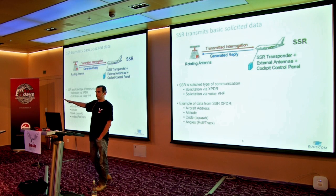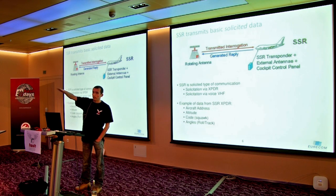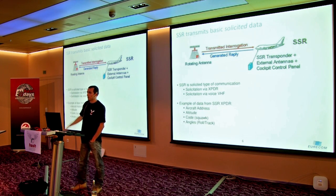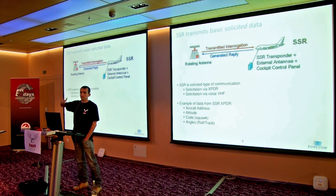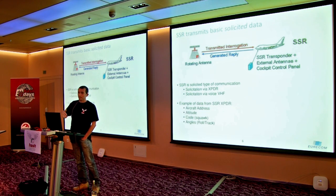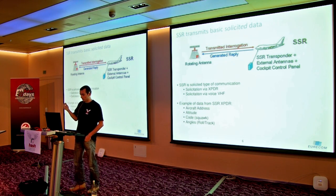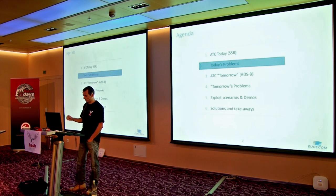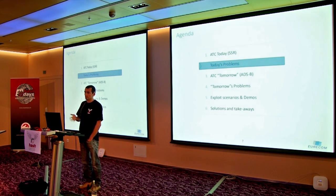Altitude is quite critical in maneuvering, especially in landing. The primary and secondary surveillance radars can locate an airplane on the horizontal axis but cannot precisely determine its altitude. So the aircraft must reply with altitude derived from barometric sensors. GPS is not that reliable for altitude, so various other sensors are used to get the most accurate reading. This is how the system has been working for the last 50 or so years.